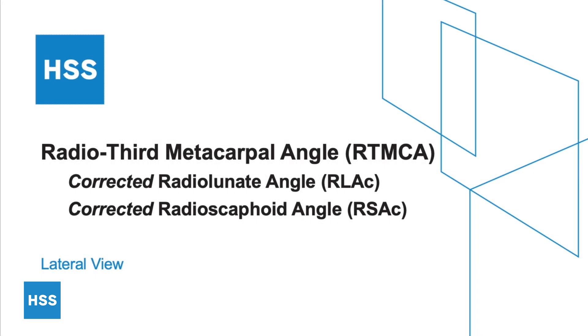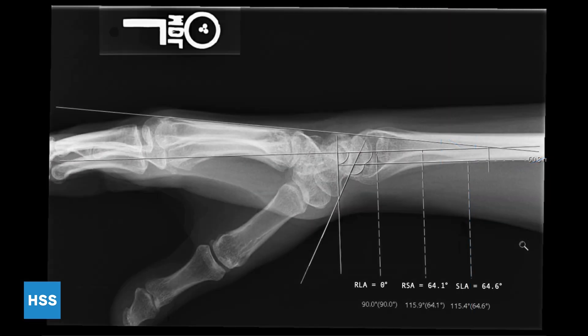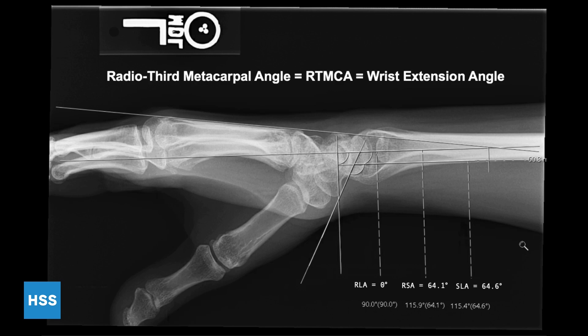Next, we will discuss the corrected radial lunate and corrected radioscaphoid angles. The following correction is based on Linscheid and Dobin's recommendation in 1972. When taking x-rays, if the wrist is in dorsiflexion or palmar flexion, there can be a resulting displacement of the carpal bones, and especially the scaphoid and the lunate. The angle between the dorsal cortex of the third metacarpal bone and the radial axis is known as the radial third metacarpal angle or wrist extension angle.